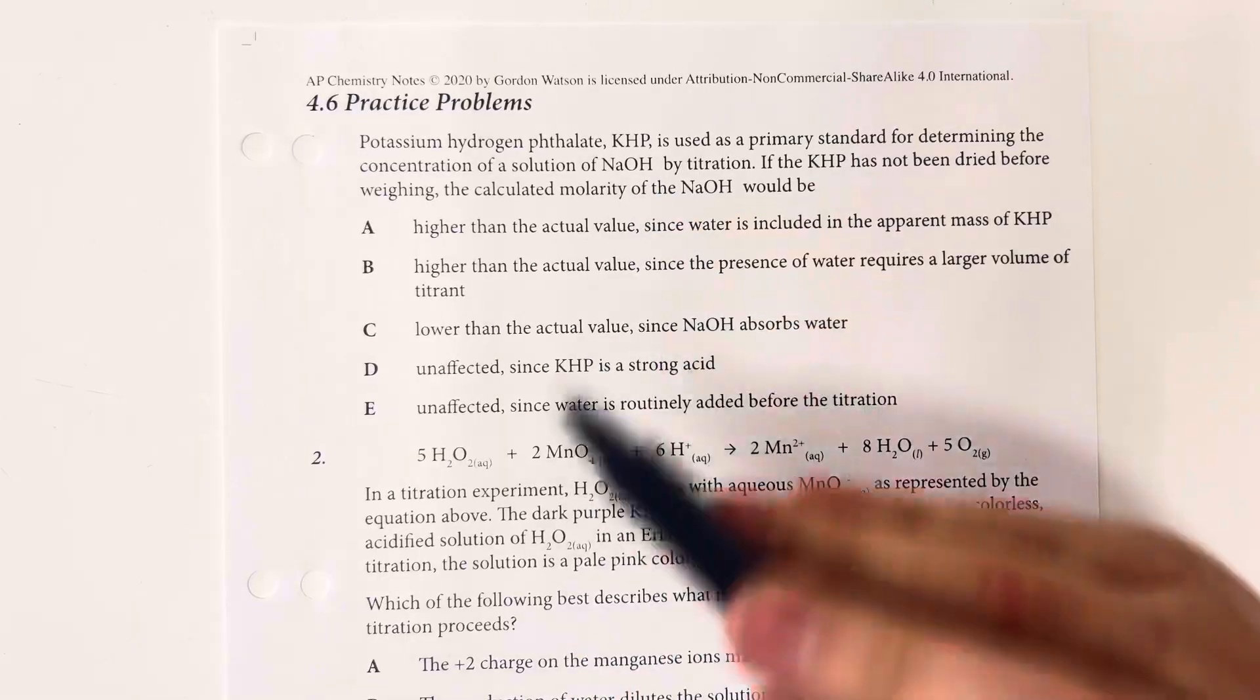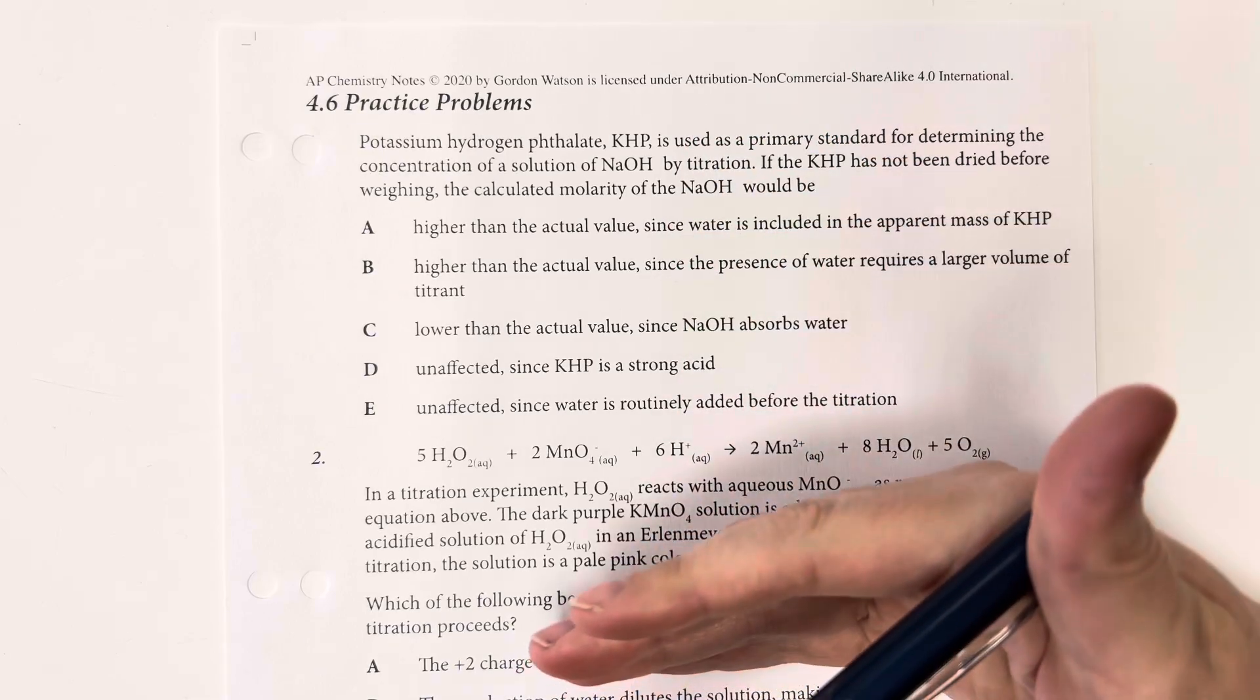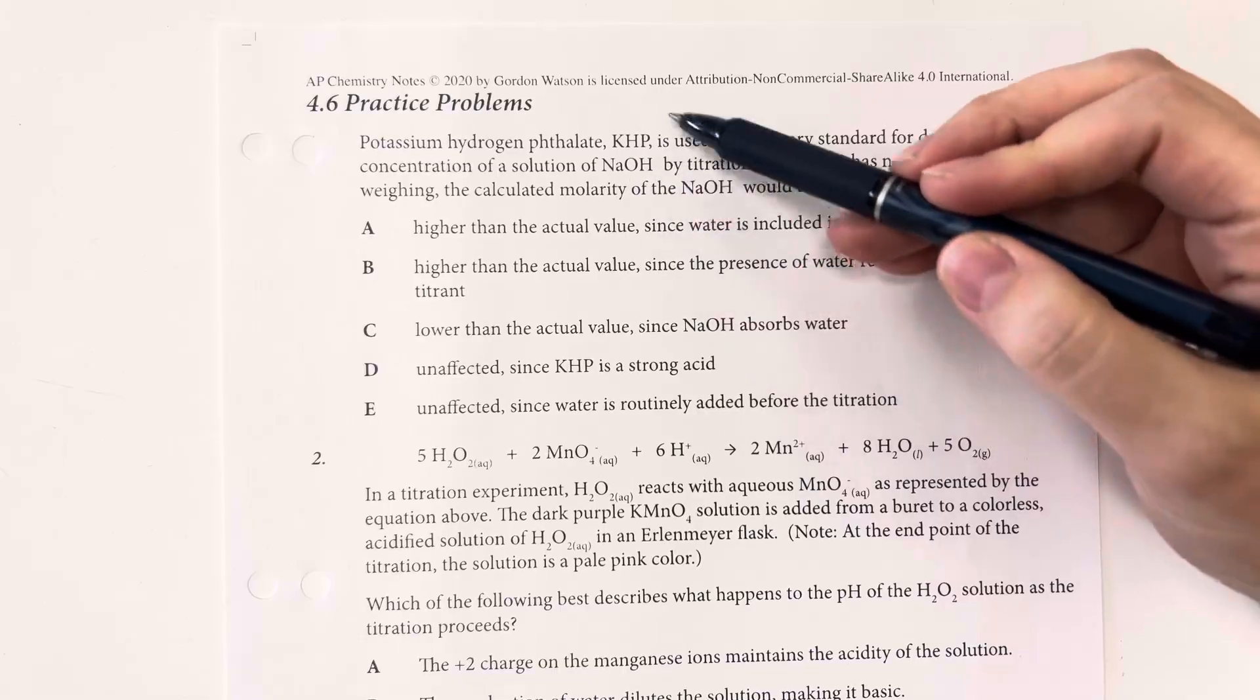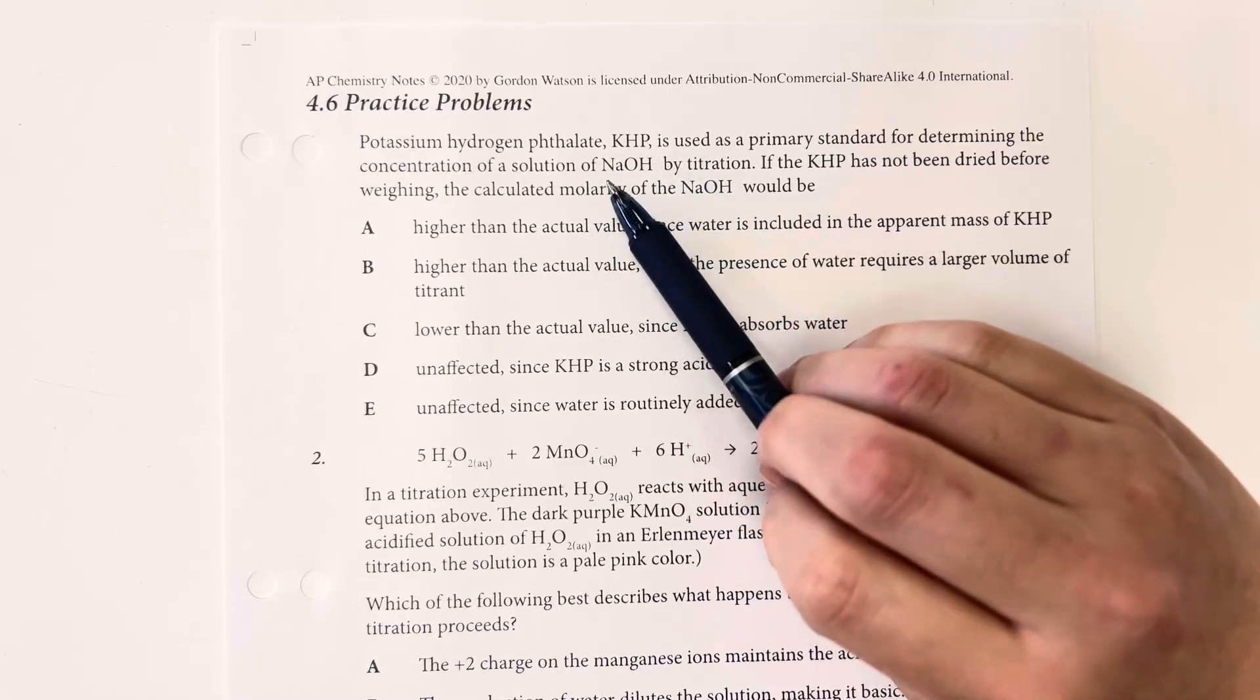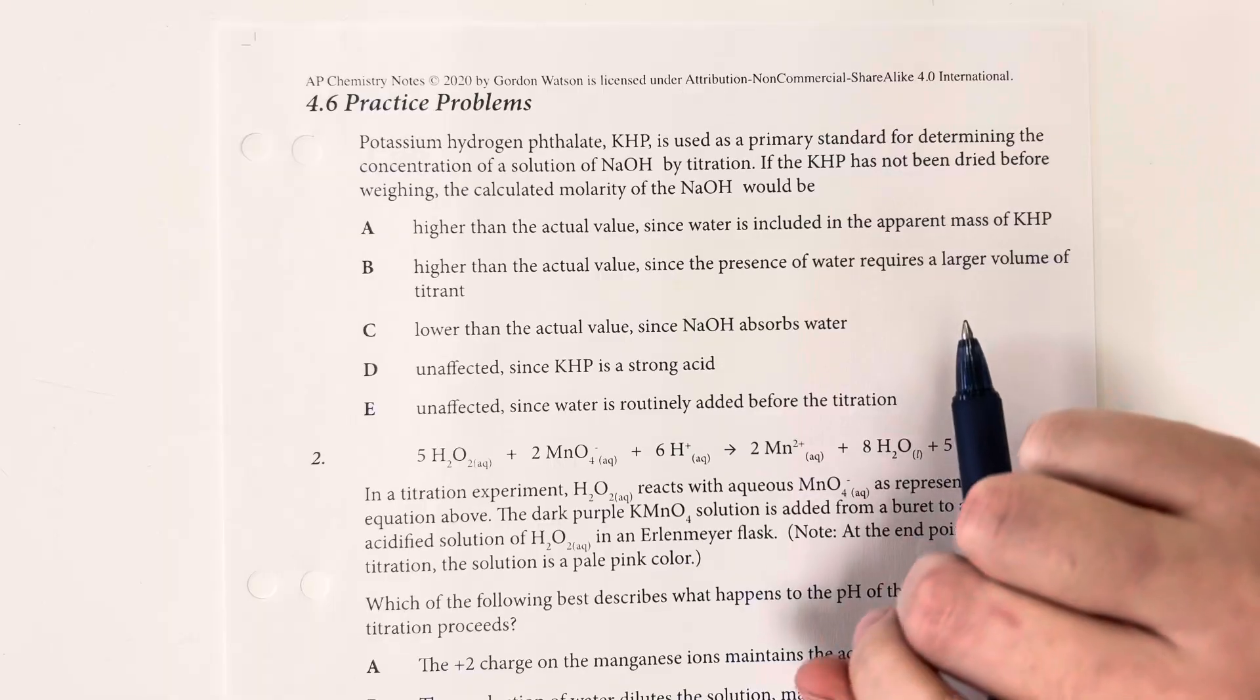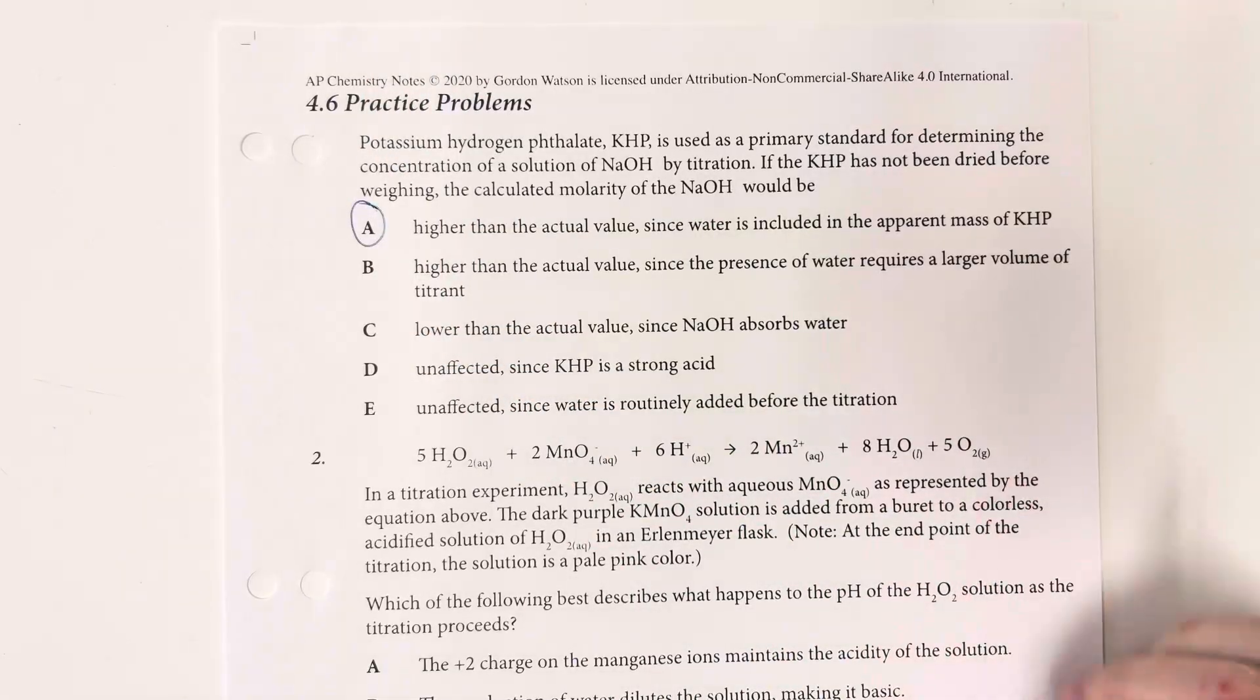that means it's going to still have some water in it and so therefore the weight will be higher, meaning that it will look like more moles of KHP were required to neutralize the sodium hydroxide, thereby making it look like it's a higher molarity of the sodium hydroxide. So that would be answer choice A.